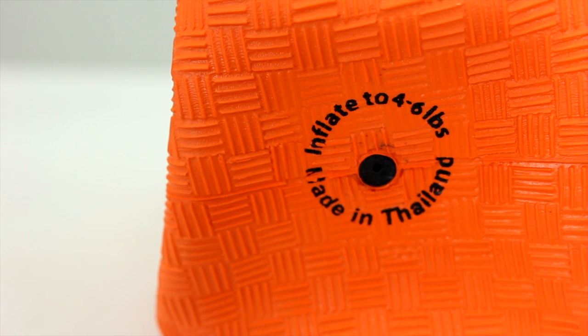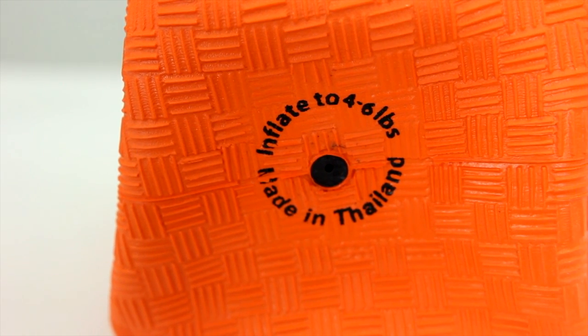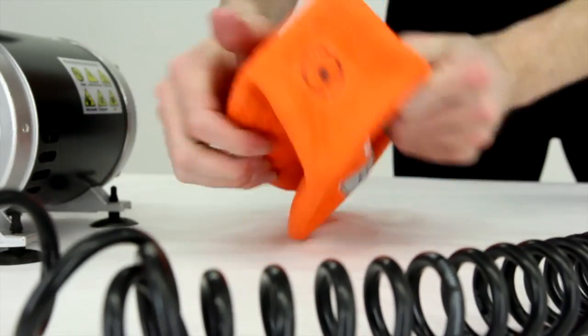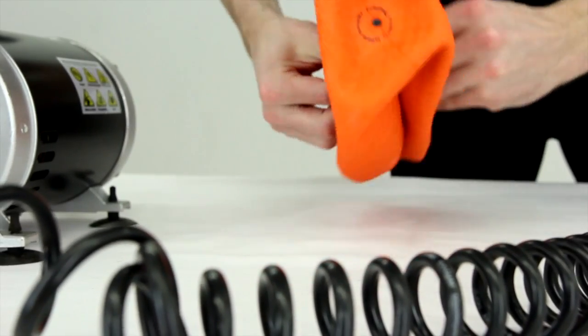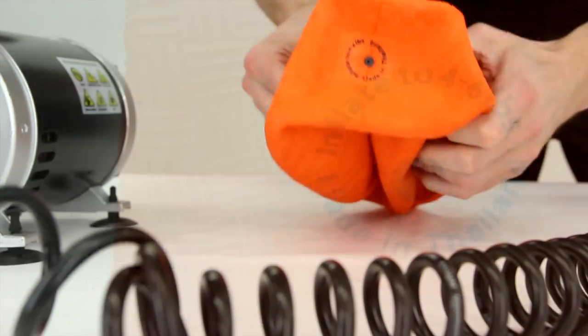Unfold the ball and search for the valve. To avoid accidental puncture of the bladder inside the ball, create an opening area within the ball around the valve. With a hand on each side of the valve, pull apart, turn, and then pull again.